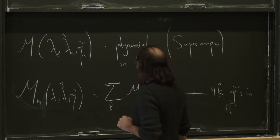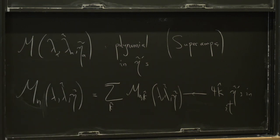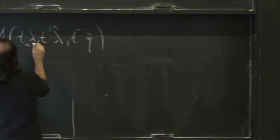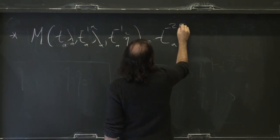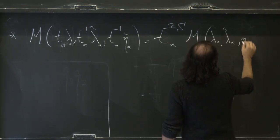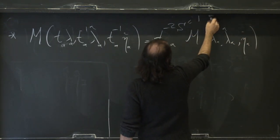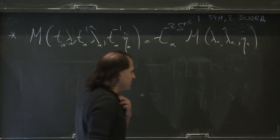Also, more basic kinematics: what do we know about the helicity weight? We know that M(T*lambda, T^{-1}*lambda-tilde, T^{-1}*eta-tilde) goes like T_a^{-2S} * M(lambda, lambda-tilde, eta-tilde), where S equals 1 for super-Yang-Mills and S equals 2 for supergravity. So all the business about helicity is taken care of by that.